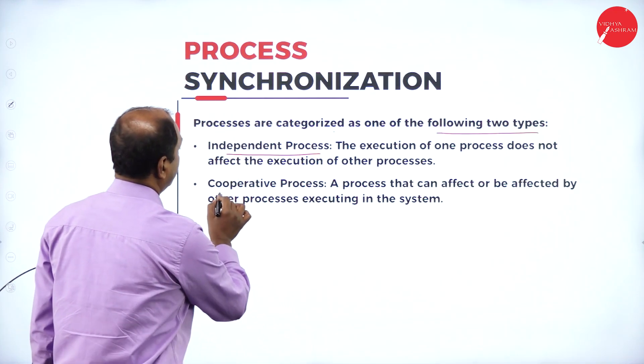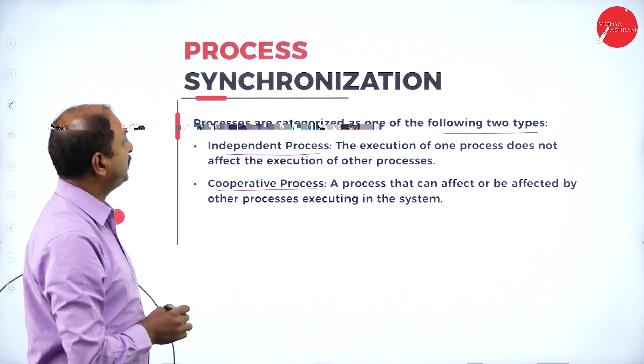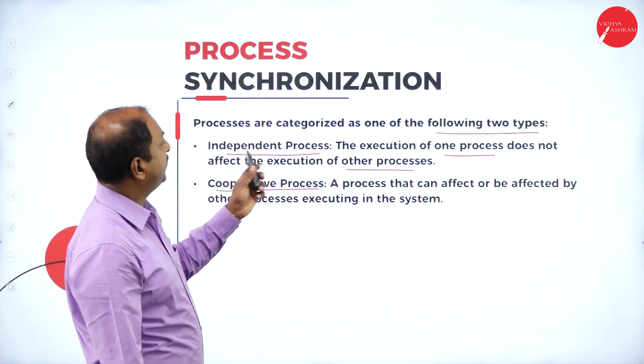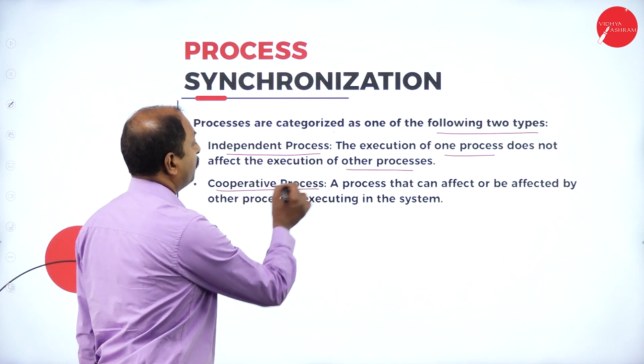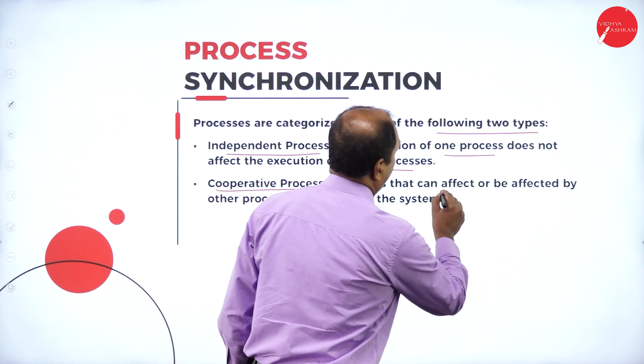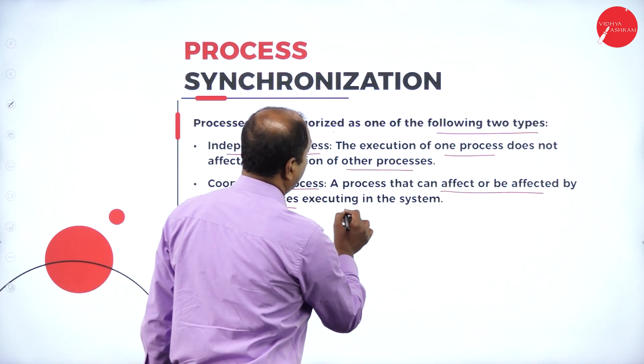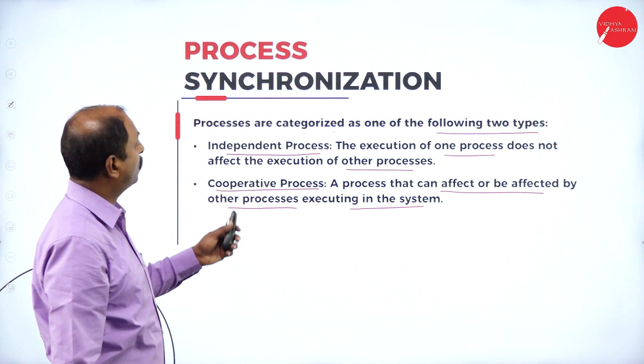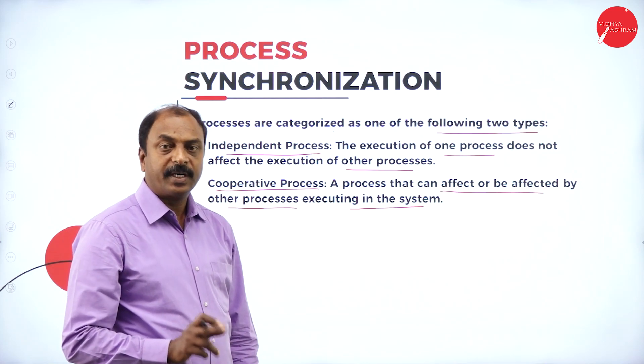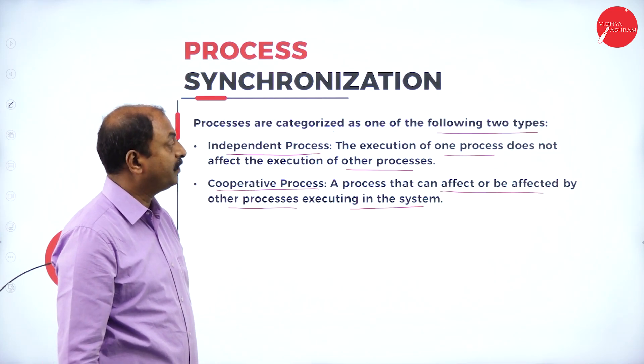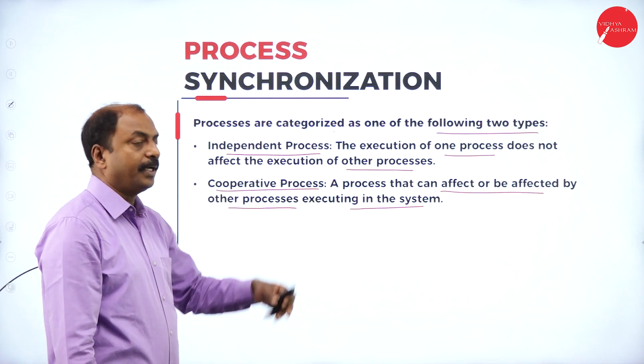The second type is cooperative process. A cooperative process is one that can affect or be affected by other processes executing in the system. So in a cooperative process, one process will be affected by or will affect other processes running in the system.